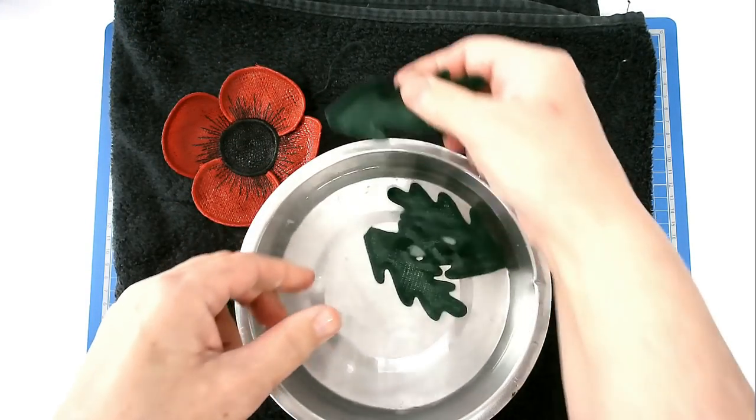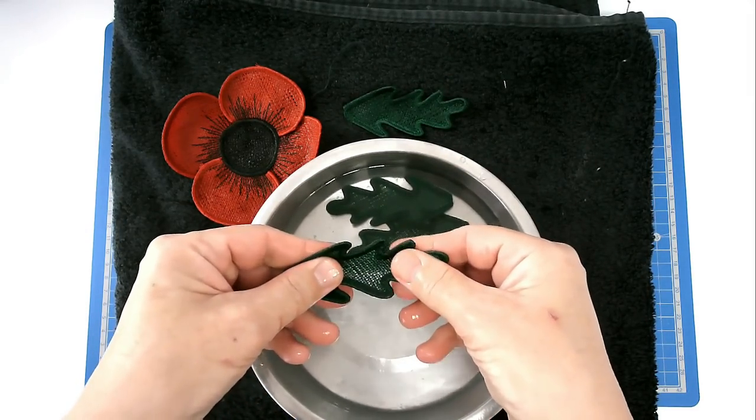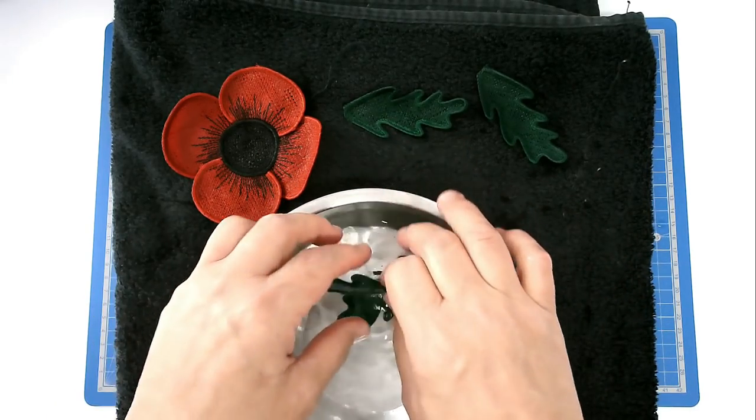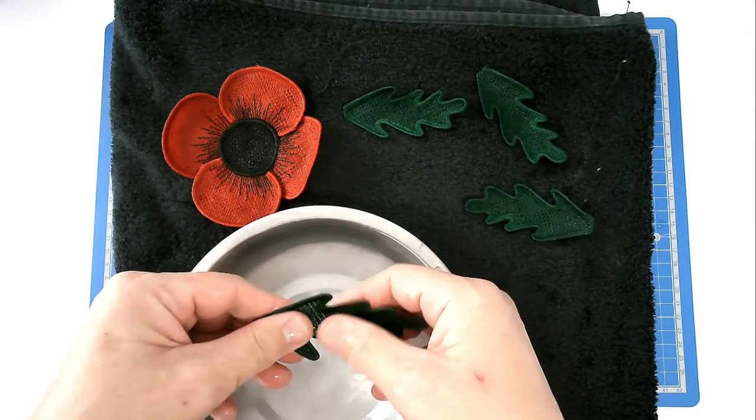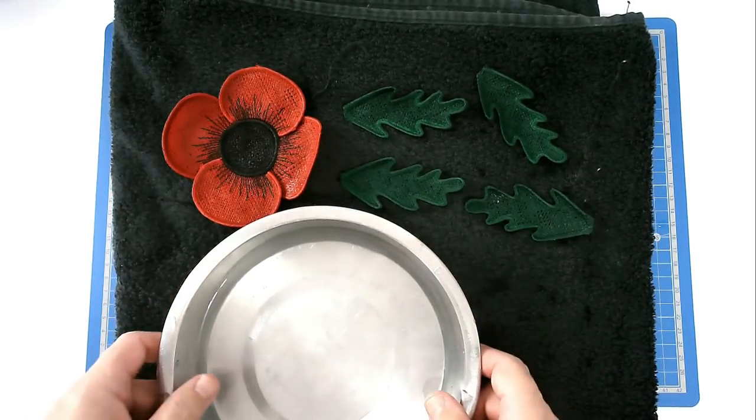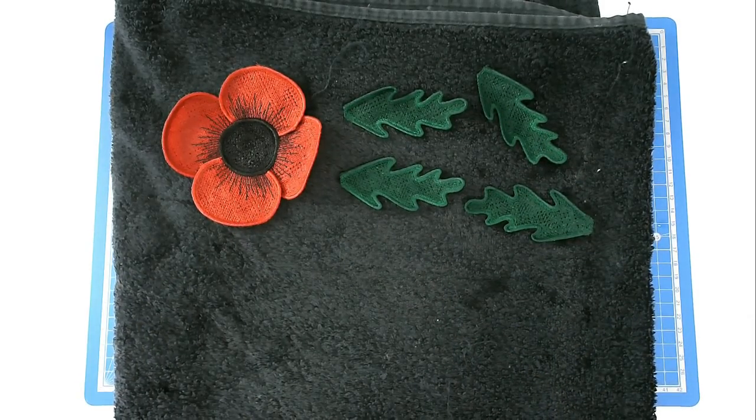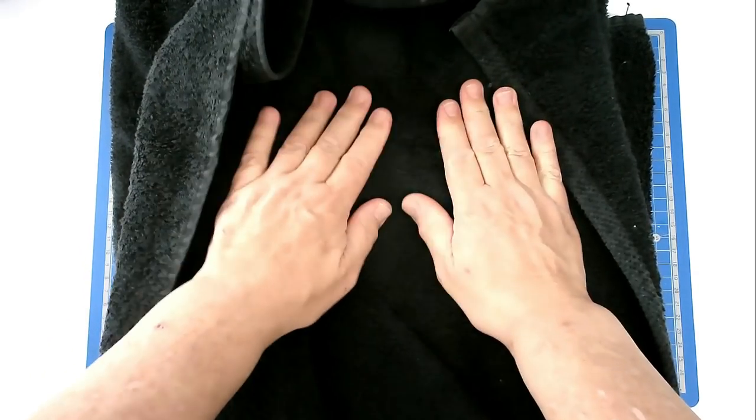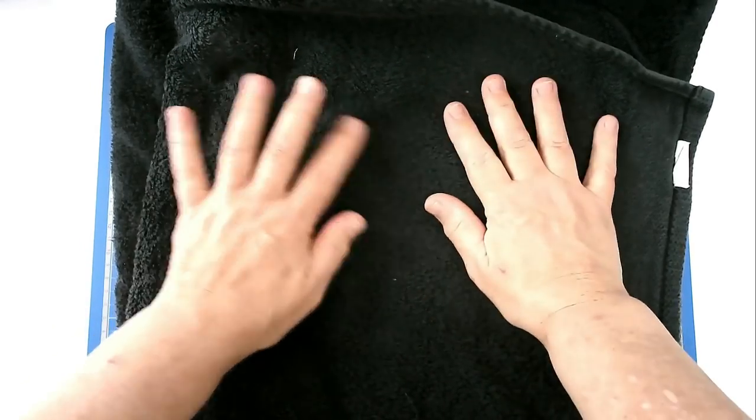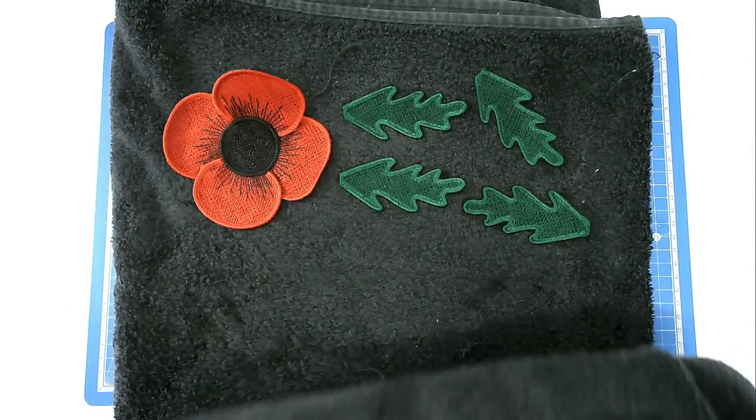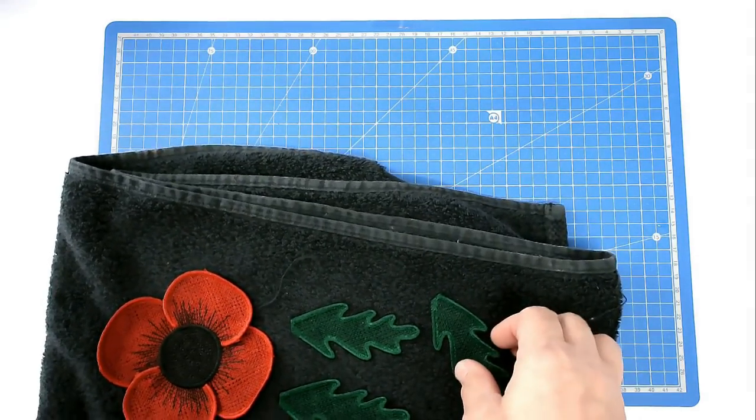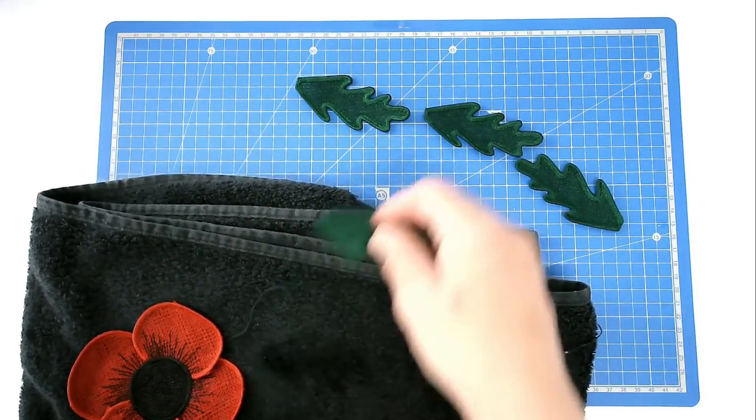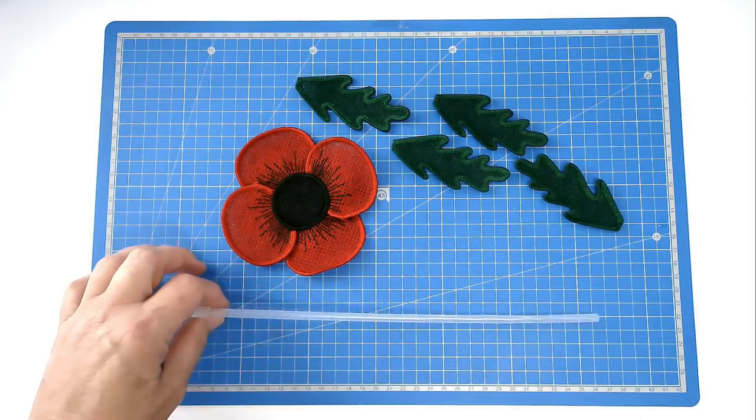Once they're rinsed I just pop them onto a towel. Normally I would put my towel on the floor, lay the parts flat, fold the towel over and then stand on it, and that does a pretty good job of wringing them out sufficiently enough to shape them for drying. So I'm just going to pat these dry, get as much moisture out as I possibly can, and now they're ready for shaping and drying.